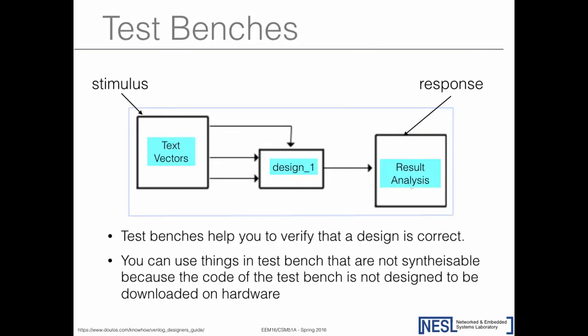Test benches in hardware design consist of two parts: the stimulus and the response. The stimulus consists of test vectors—you assume inputs have certain values like a pattern of 1, 0, 1, 0, and check whether the output matches what you expect. You define input patterns and golden output values to see if your design produces the correct result or contains a mistake.